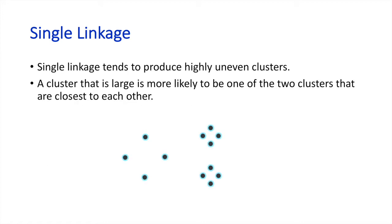Unfortunately, single linkage produces highly uneven clusters since the larger clusters are more likely to be merged in each round. This is an example where single linkage performs poorly. We continue merging until we get only three clusters.